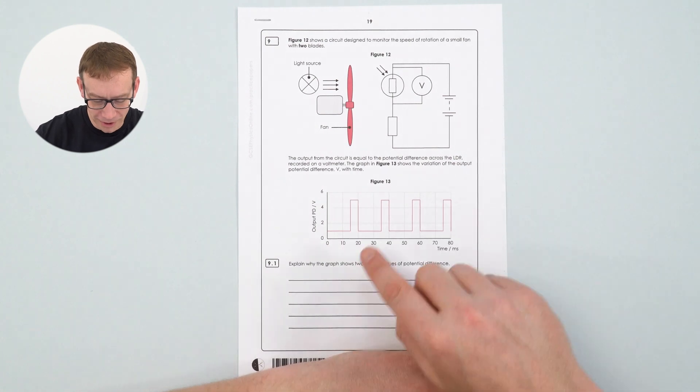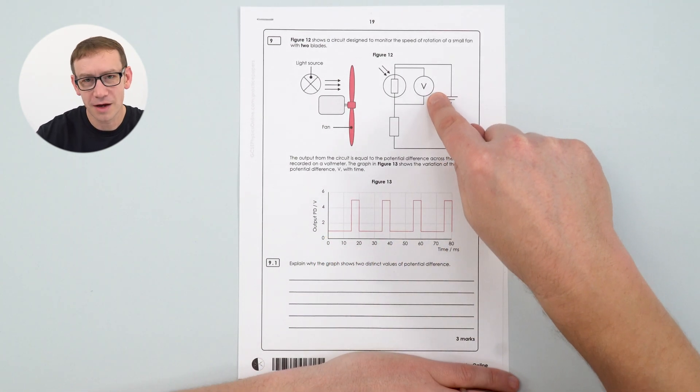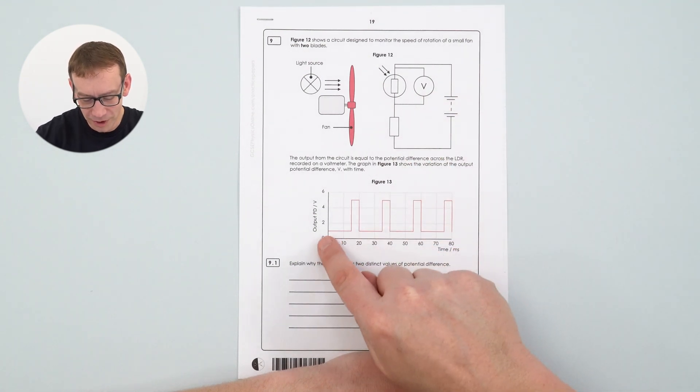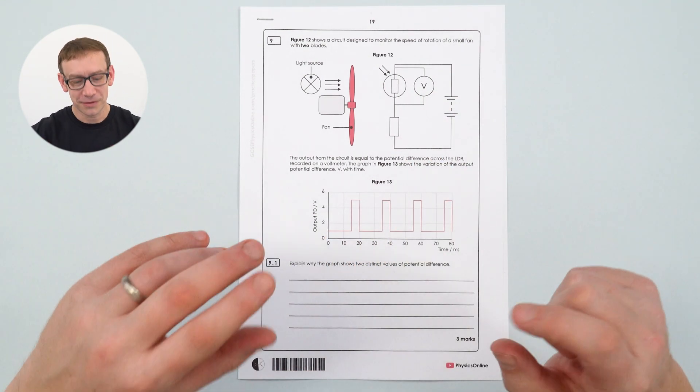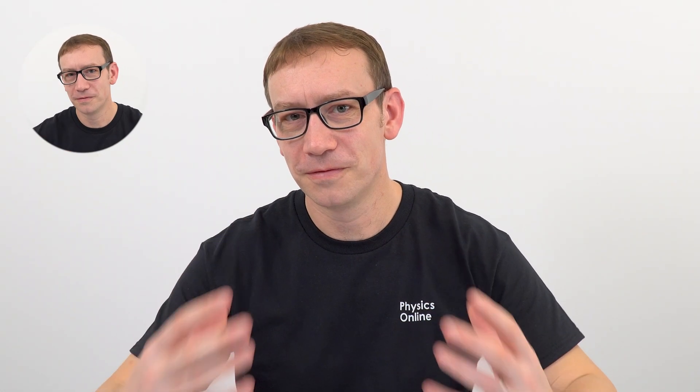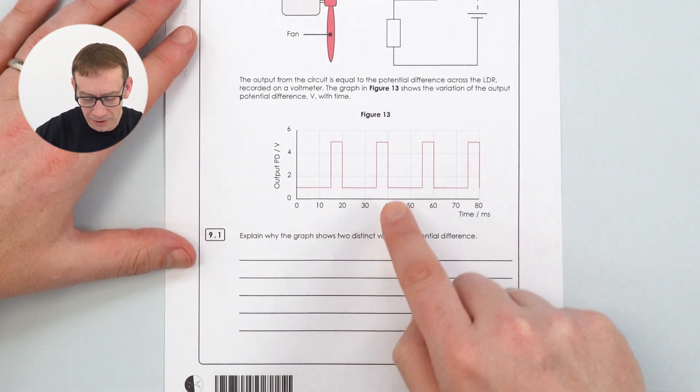So we have an electrical circuit. We then of course involve the skills about actually interpreting the information on the graph. So we can see that the output potential difference across that voltmeter changes with time. So sometimes it's low and then sometimes it's high. Now the first question is an explanation. So this is where we've got to think about your physics knowledge. Why does the graph show two distinct values of potential difference?